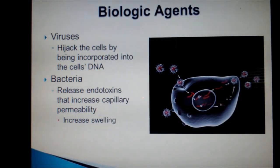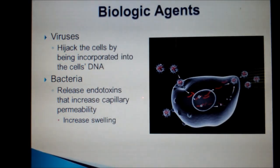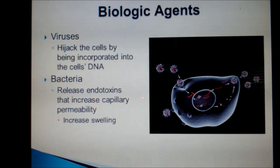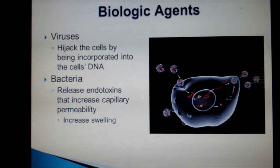Biologic agents include both viruses and bacteria, but also include our body's immunological response to foreign invaders. Viruses hijack cells by being incorporated into DNA, in the case of retroviruses. They can multiply until their numbers become so great as to break out and overwhelm the cell's defenses. Bacteria are a little more straightforward — they tend to release endotoxins that increase capillary permeability and lead to cellular swelling and possible cell death.